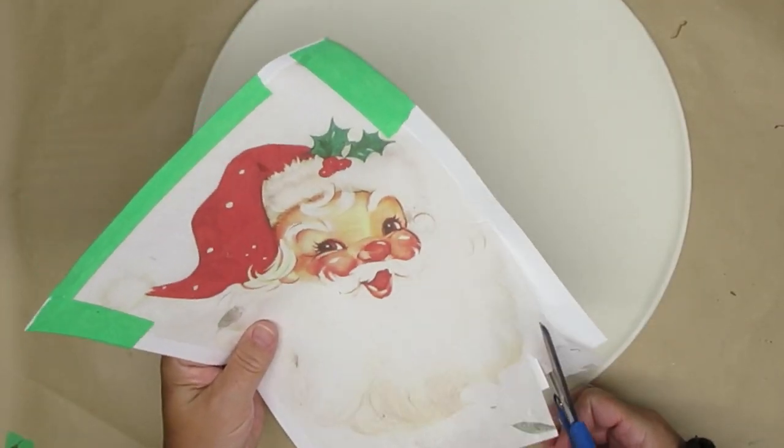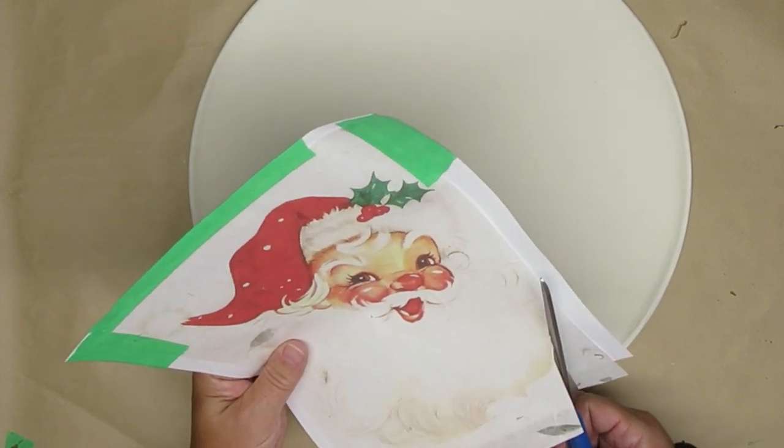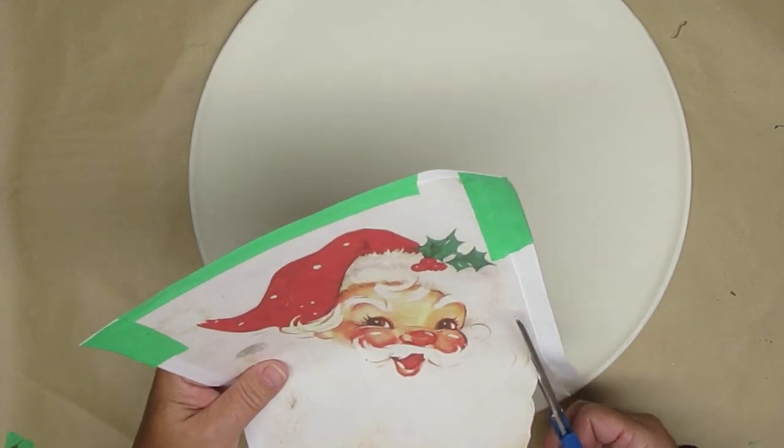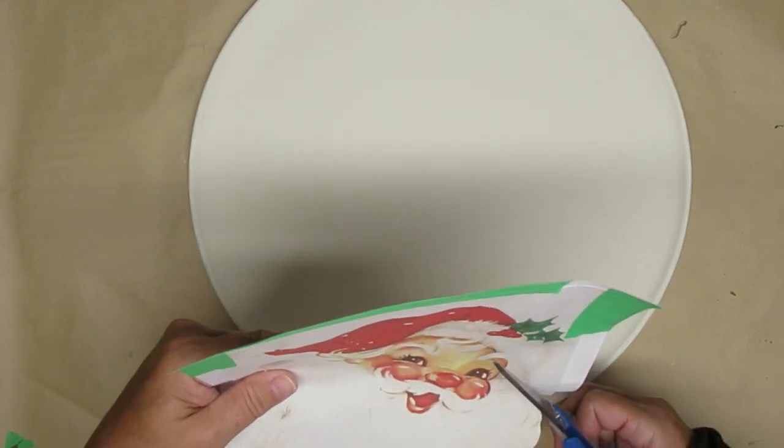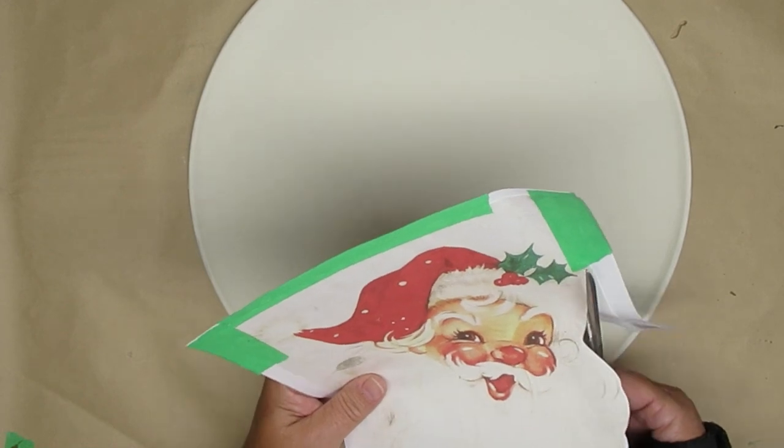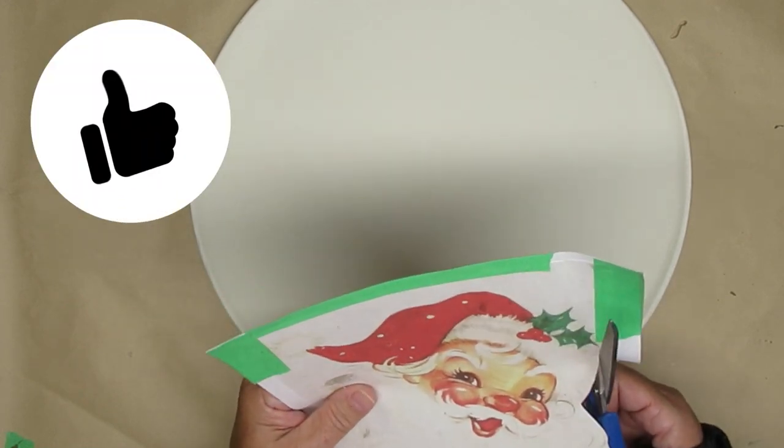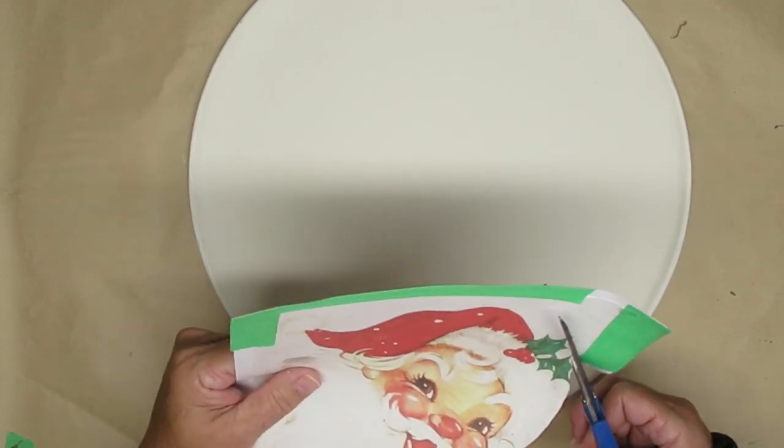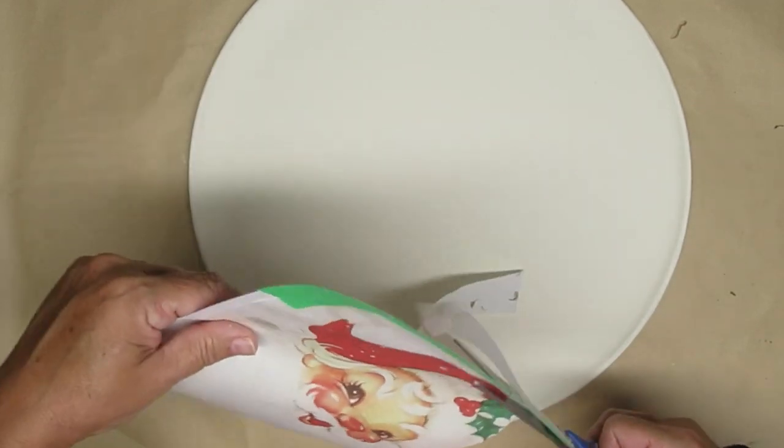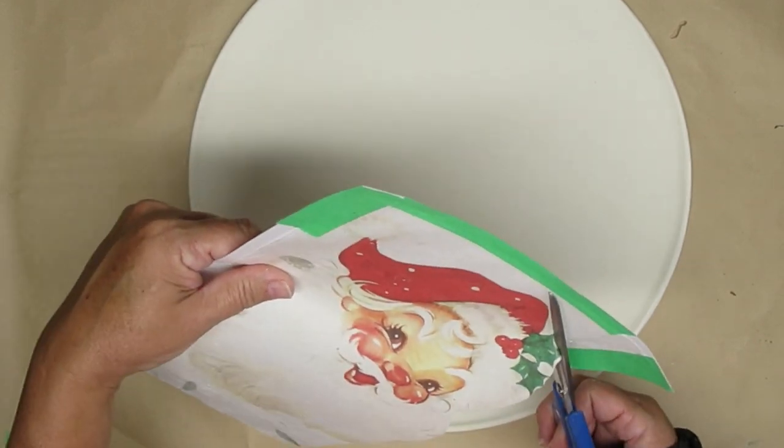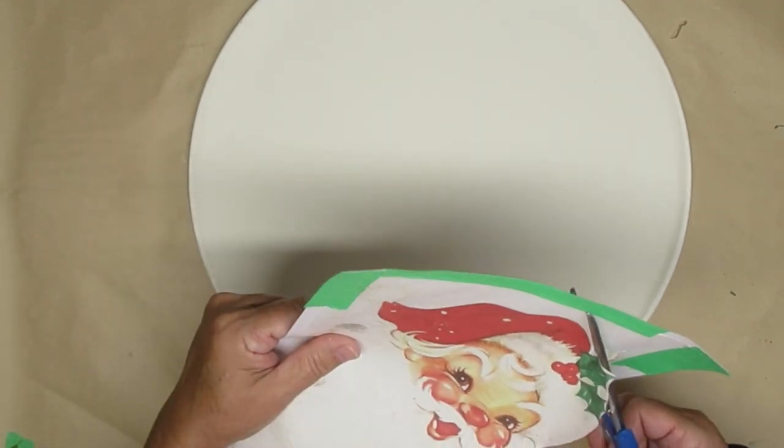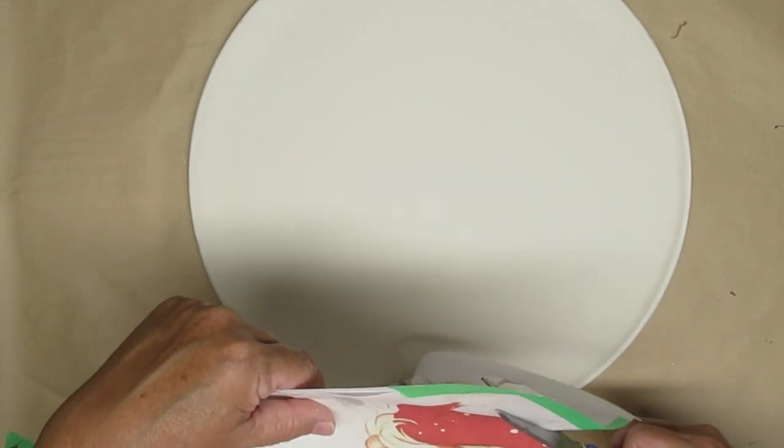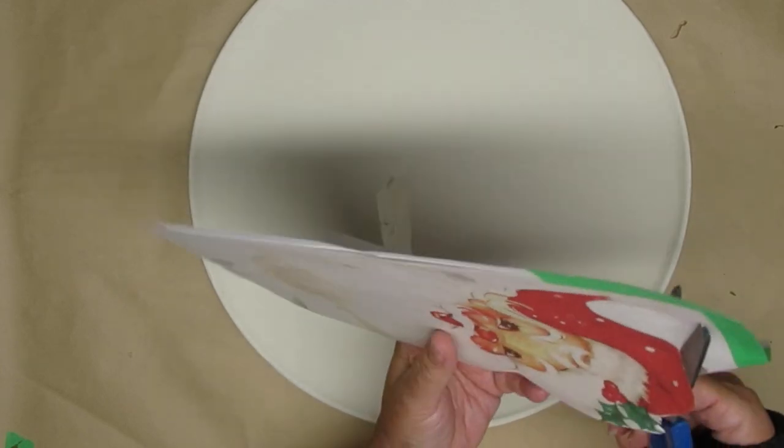If you follow me on my channel you know that I get a lot of free printables from Pixabay. This is a website that allows you to use all of their images for free. All they ask is that you sign up for a free account. I printed off this vintage Santa on a piece of rice paper. The rice paper is not white and it's not as thin as tissue paper, but I still put it on a piece of regular printer paper and put it through my machine. You can see I just used some painters tape to attach it to the top and now I'm just going to cut it out.